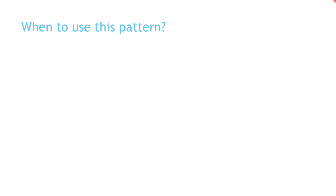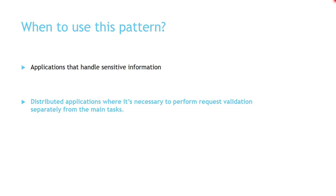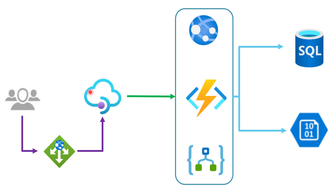Now let's consider when you should use this pattern. Use it when your application handles sensitive information and you want to add additional security layers to protect your application layer services. Also use it when you have distributed applications and want to perform request validation separately from the main tasks. In our example, the API management handles OAuth authentication and transformation policies, while the Application Gateway handles common security defenses against SQL injection and cross-site scripting — both handled separately from the application layer services.